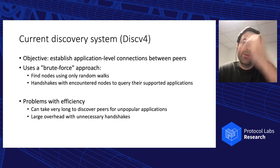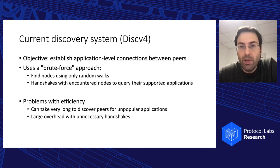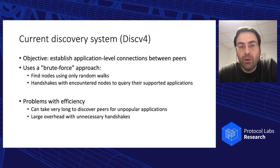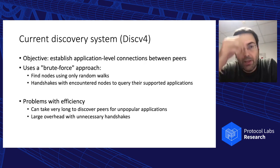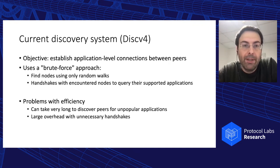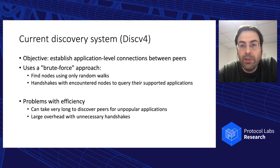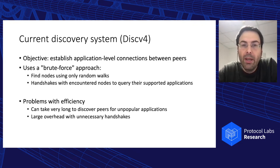The objective of a discovery system is basically for a peer to establish application-level connections. The existing discovery system of Ethereum uses a brute-force approach where nodes perform random walks. A node picks a random destination ID, and because nodes are arranged in a distributed hash table (DHT), it uses a built-in get method to efficiently find nodes closest to that random ID. Along the random walk, you perform a handshake with encountered nodes to find out which applications they support, and if two nodes support the same application, they can form a connection.